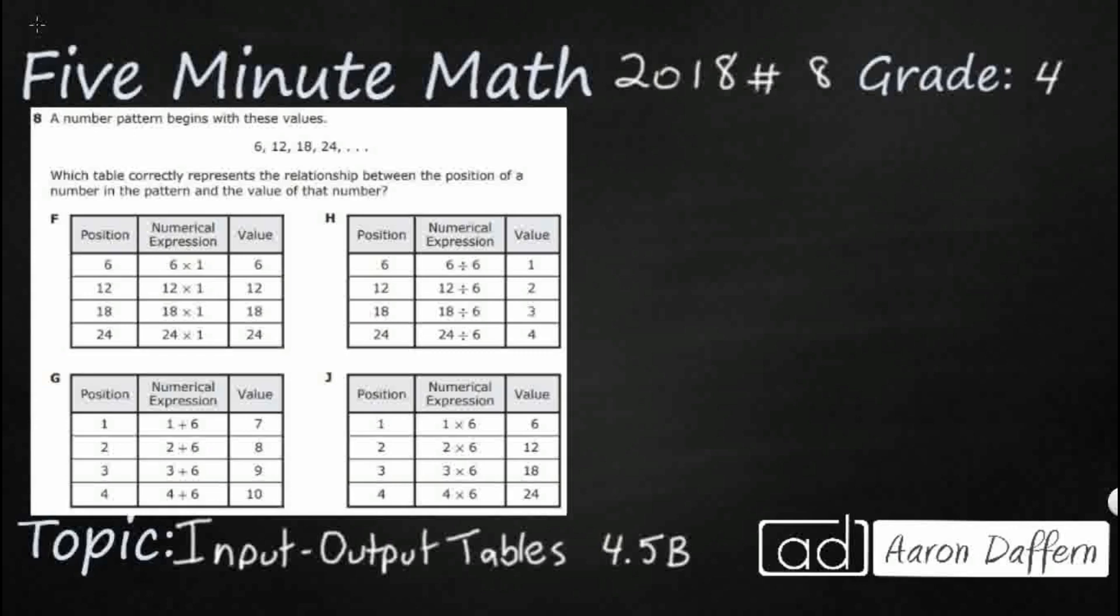So we have a number pattern and it begins with these values: 6, 12, 18, 24. Looks like we're skip counting by sixes there. So we need to find a table that shows the relationship between position of a number in the pattern and the value of that number.